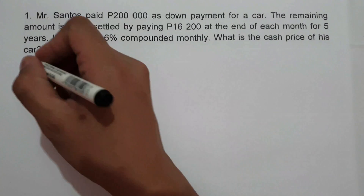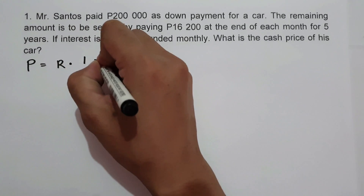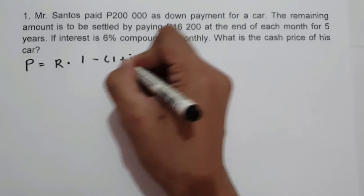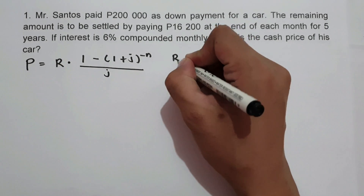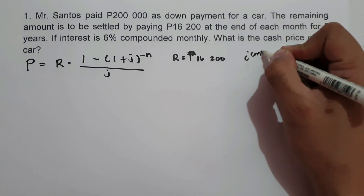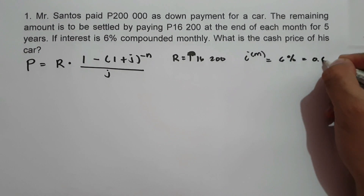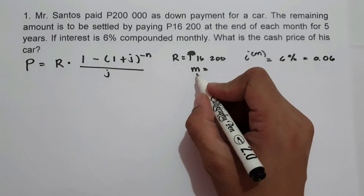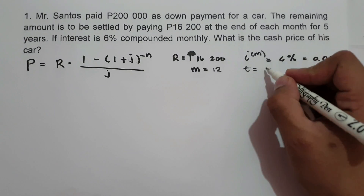To find the cash price of his car, we use the formula P equals R multiplied by 1 minus the quantity of 1 plus J raised to negative N, all over J. The given values are: periodic payment R is 16,200; annual rate I^M is 6% or 0.06; frequency of conversion M is 12 (compounded monthly); and time T is 5 years.